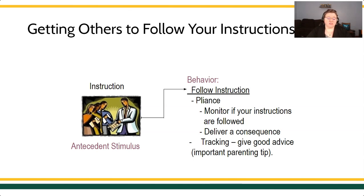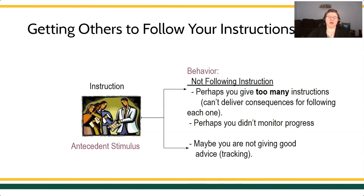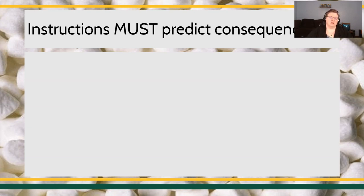If you're thinking about instructions from the perspective of tracking, you just have to make sure you're giving good advice. If your advice doesn't actually communicate what the environment is going to be like, people aren't going to follow your advice anymore. If people are not following your instructions, you can troubleshoot: perhaps you're giving too much information or too many instructions so you can't deliver consequences effectively for each one, or maybe you didn't monitor the learner's progress. If we're talking about tracking, check whether your advice actually matched the contingencies the person experienced.